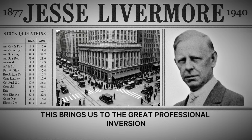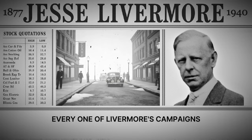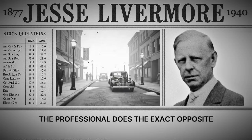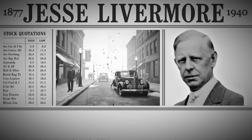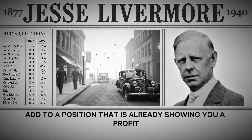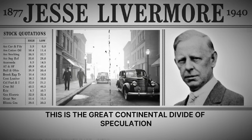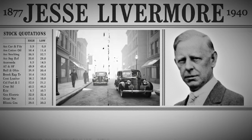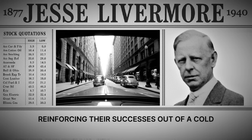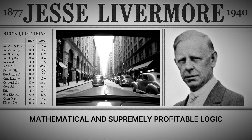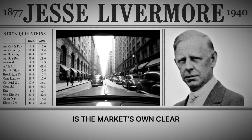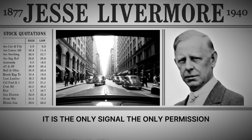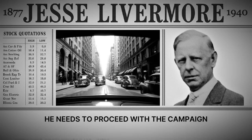This brings us to the great professional inversion — the invisible rule that governs every one of Livermore's campaigns. Having seen the ruinous path of the amateur, the professional does the exact opposite. The rule of the professional: you only add to a position that is already showing you a profit. This is the great continental divide of speculation. On one side lies the 90%, reinforcing their failures out of hope. On the other lies the 10%, reinforcing their successes out of a cold, mathematical, and supremely profitable logic. A profit, in the eyes of the master, is the market's own clear and unambiguous confirmation that his initial judgment was correct.